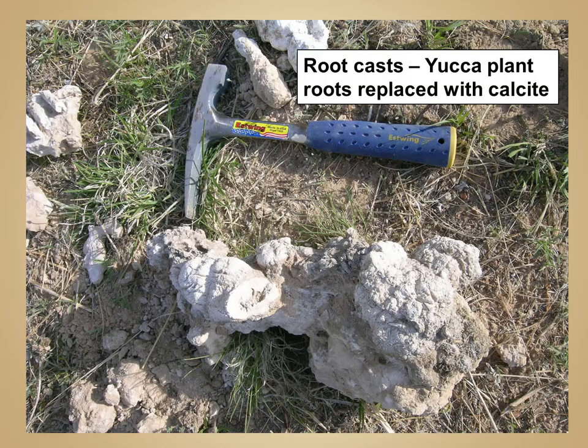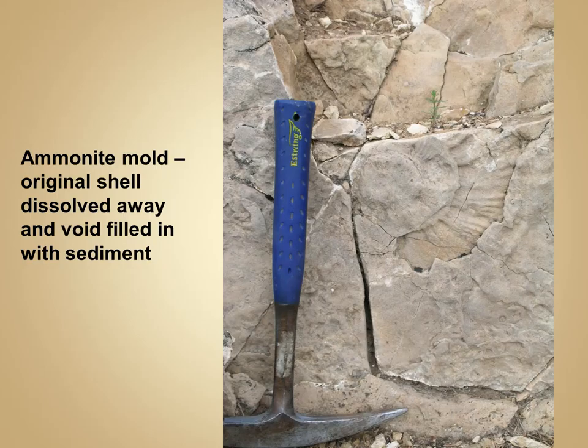Another example shows a root cast of a yucca plant. In some cases, the void space is filled with sediment. In this example, an ammonite — a small marine organism — has dissolved away, and the space is filled in with sediment, leaving the impression of the ammonite.